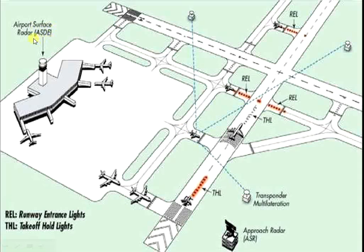This is the airport surface radar, or ASD. We can also see the aircraft stand, the control tower, the shelters or apron, the taxiway, the main runway, the transponder, and the approach radar, also known as ASR.